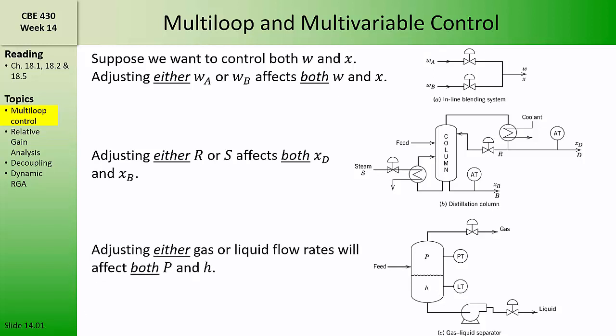Even for very simple operations like this flash drum, if we want to control both the pressure in the tank and the level in the tank, we can adjust the gas flow rate and the liquid effluent flow rate. But adjusting either of those flow rates will affect both the pressure in the tank and the level in the tank.